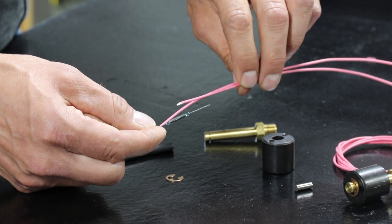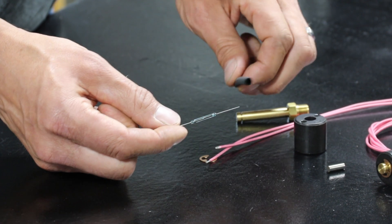Wires are then soldered to both ends of the reed switch. It also gets covered with shrink tubing like this.